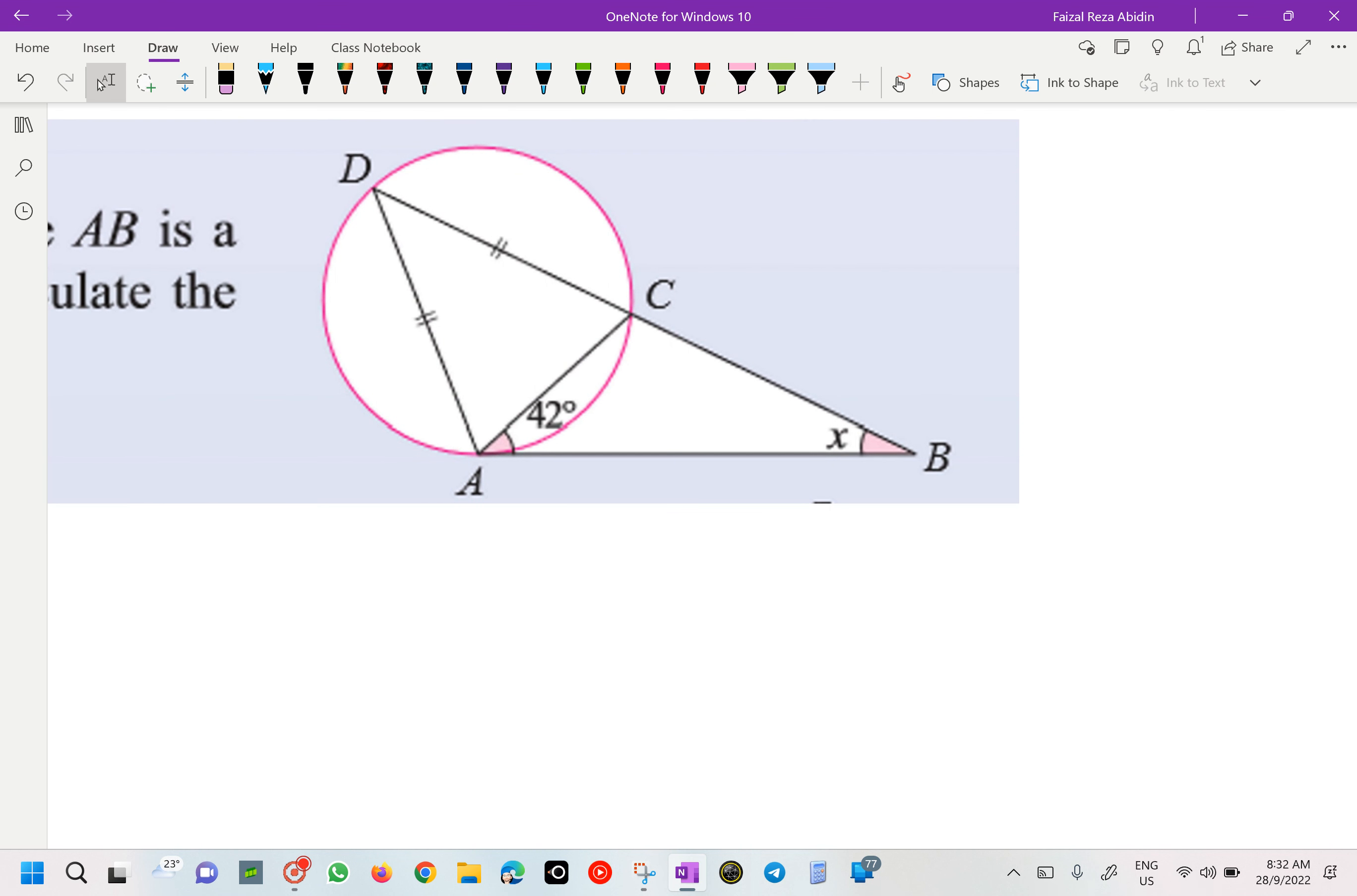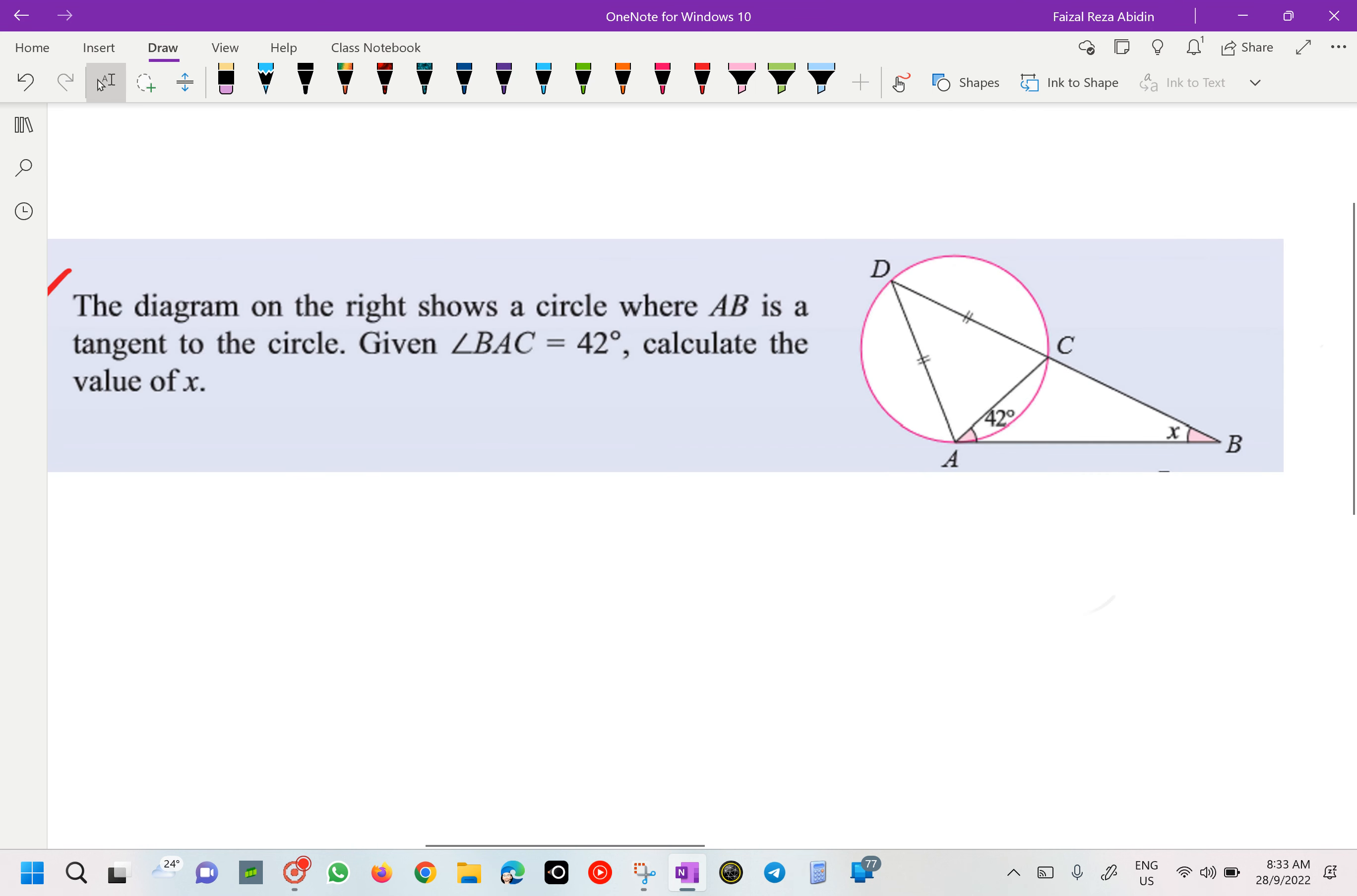So how are we going to find our x there? Anyone? If you look over there, it's saying that AB is tangent.